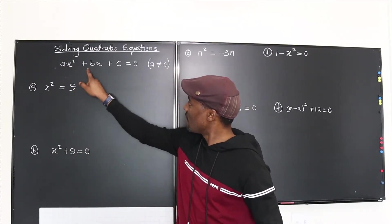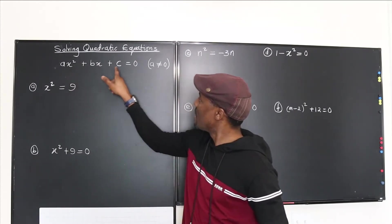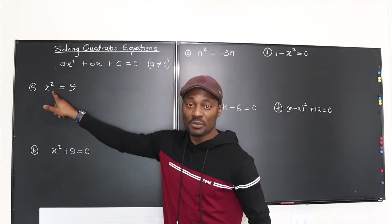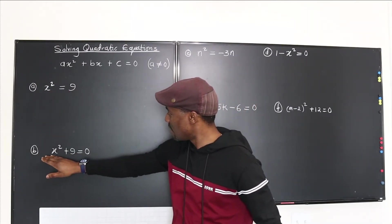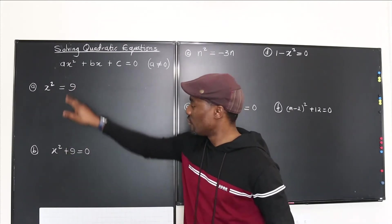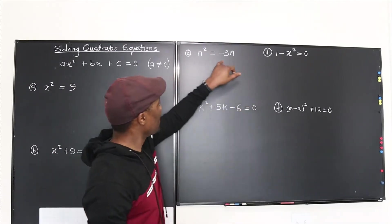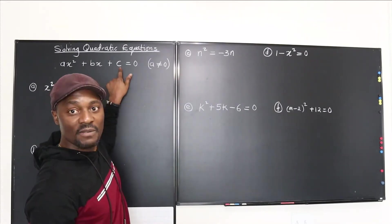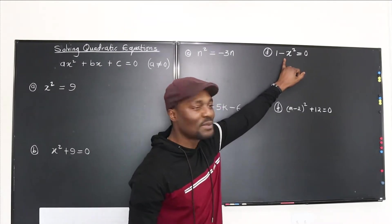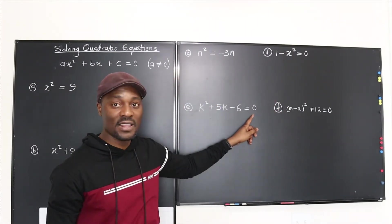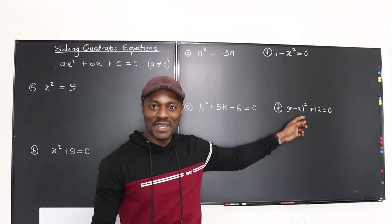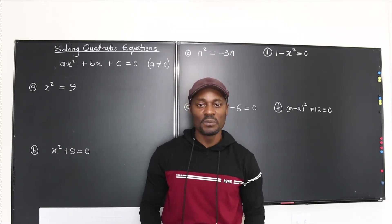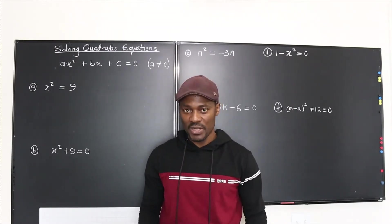Everything else could be there or not. For example, one expression has no term containing just x — only the squared term and the constant, where a=1 and c=−9. Another has c=+9. Some forms are missing the constant term, some are missing the middle term, and some have everything. This video is about the different forms quadratic equations can take and how to treat them.